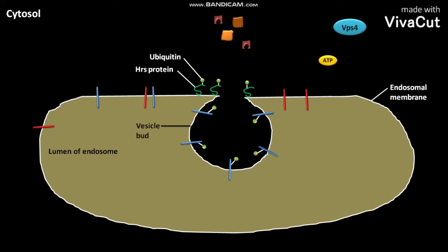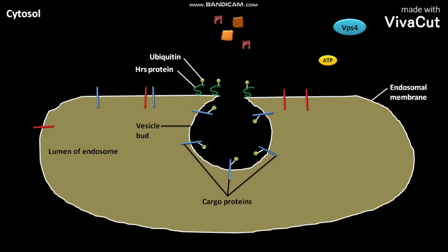vesicle buds are formed. The ubiquitinated HRS protein directs the loading of specific membrane cargo proteins into the vesicle buds. The cargo proteins are also attached with ubiquitin.